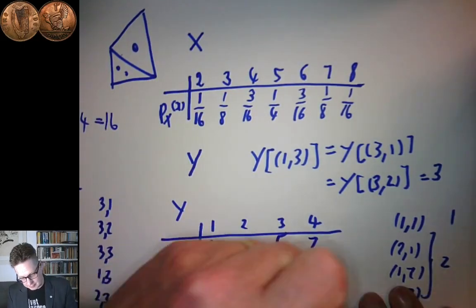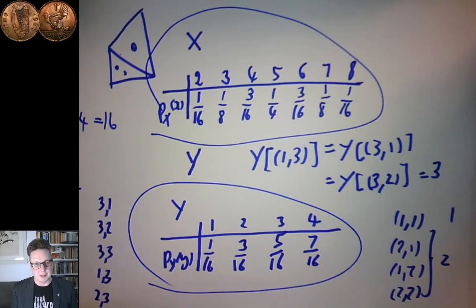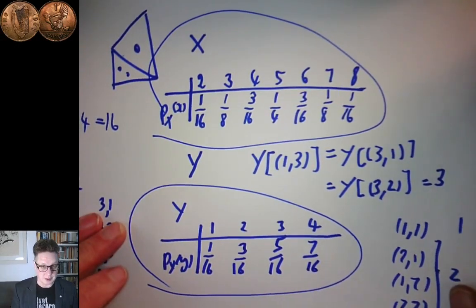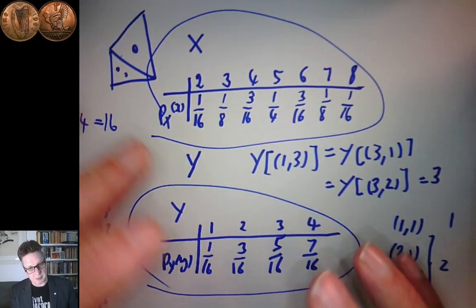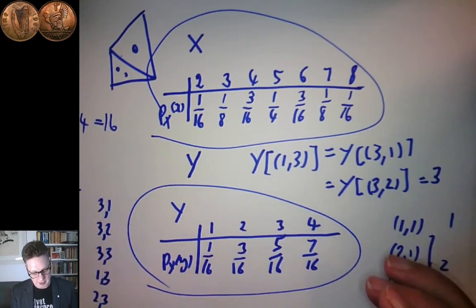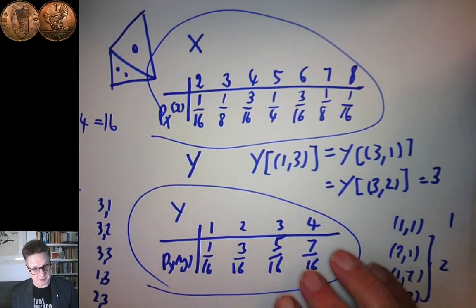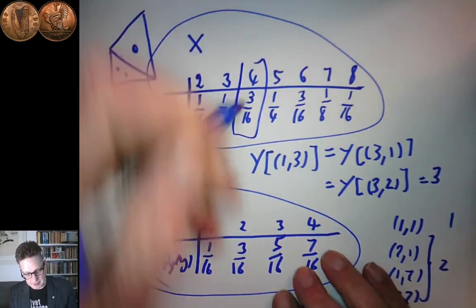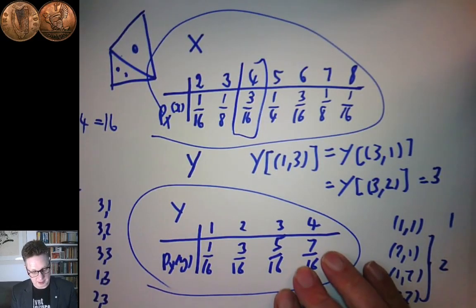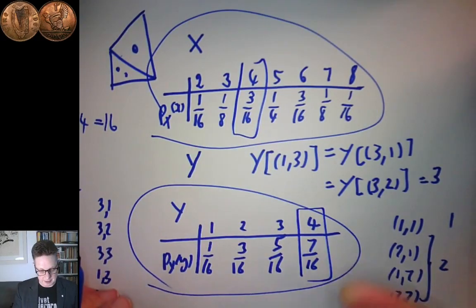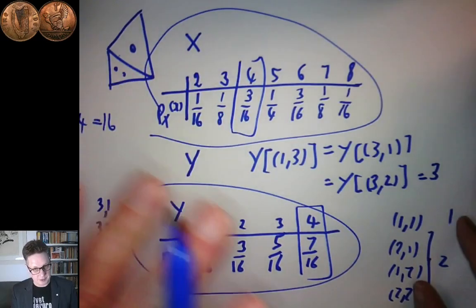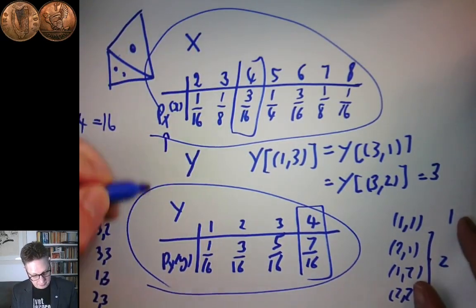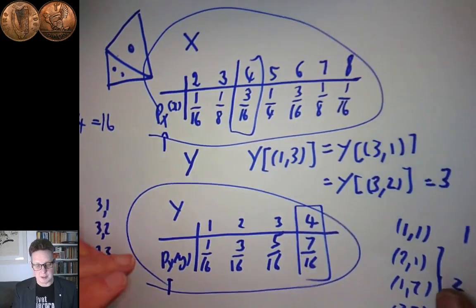So here I've worked out two probability distributions. They describe the random variables X and Y, both living on the same outcome space but describing different sets of events. For example, P_X gives the probability that the sum of the two dice equals a value, whereas P_Y gives the probability that the maximum of the two dice equals a value. That's why it's useful to put the subscript X and Y on the distributions, so you don't get confused when you have more than one probability distribution.